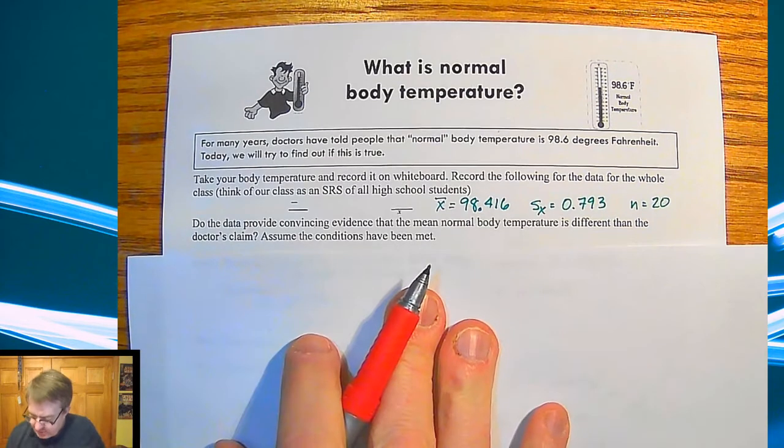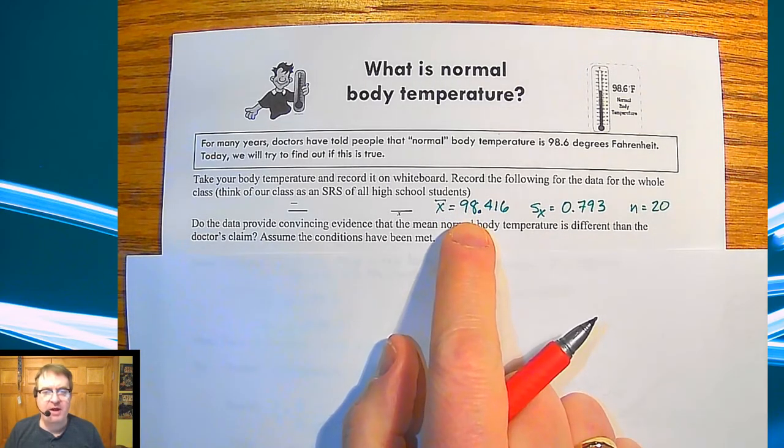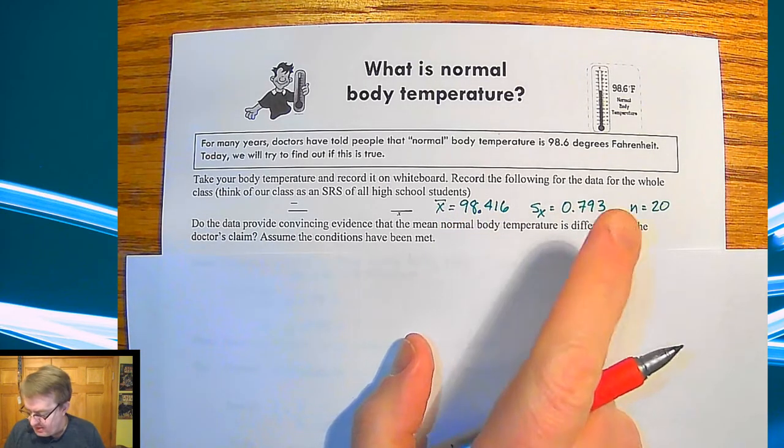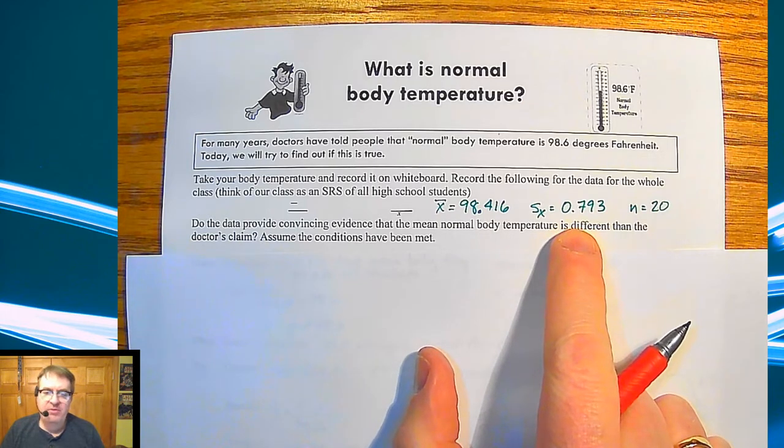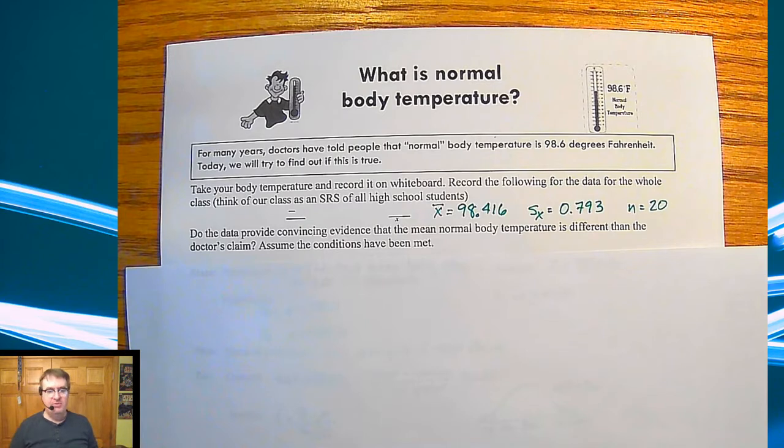Last year, we took body temperatures of everybody in class to see if that 98.6 degree normal temperature the doctors always tell you is actually normal, which is a little ironic given our circumstances of 2020 and 21. But this was the data I had last year: 98.416 as a mean, standard deviation was 0.793 degrees, and sample size was 20. Think of our classes as a simple random sample for all high school students.